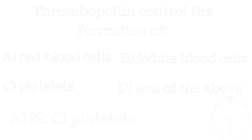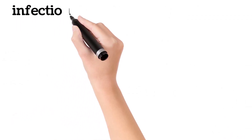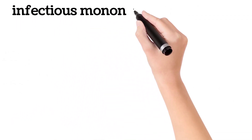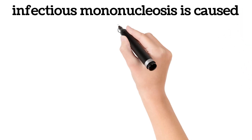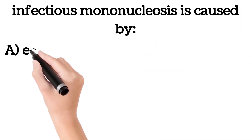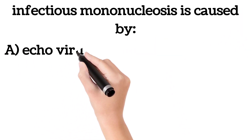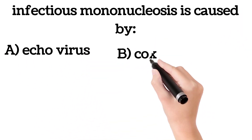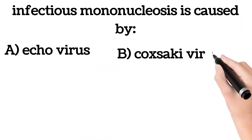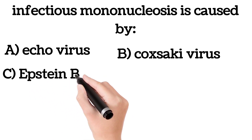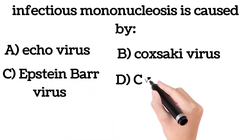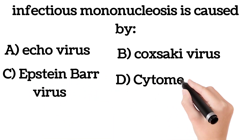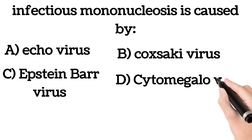Infectious mononucleosis is caused by: A. Echovirus, B. Coxsackie virus, C. Epstein-Barr virus, D. Cytomegalovirus.